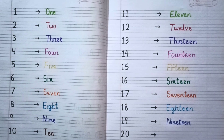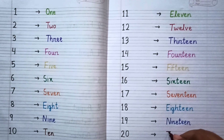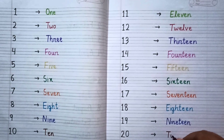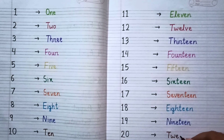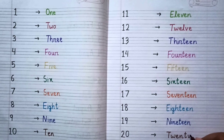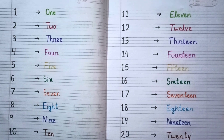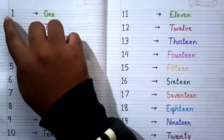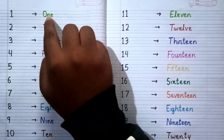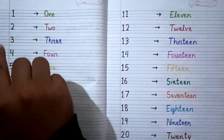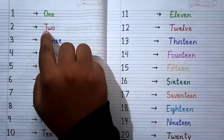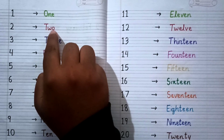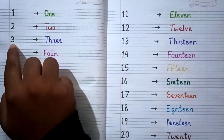After nineteen the next number will be twenty and the spelling of twenty is T-W-E-N-T-Y, twenty. Again repeat the spelling with me: T-W-E-N-T-Y, twenty. Now again count with me: 1 one, 2 two.